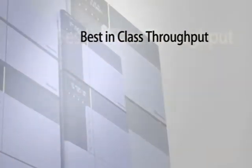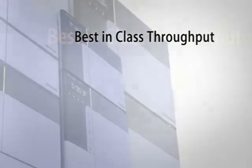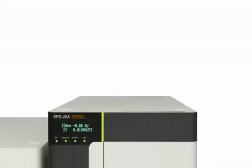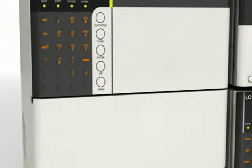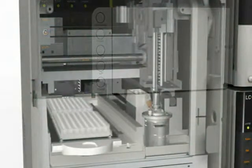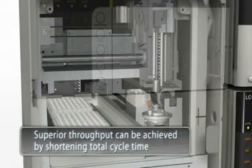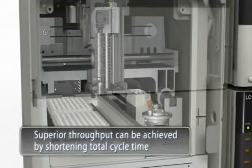Nexera. What is true high-throughput? Undoubtedly, it is achieved here for the first time. A shortening of the cycle time, which includes not only the data collection time, but also the time required for column equilibrium and injection of the next sample.